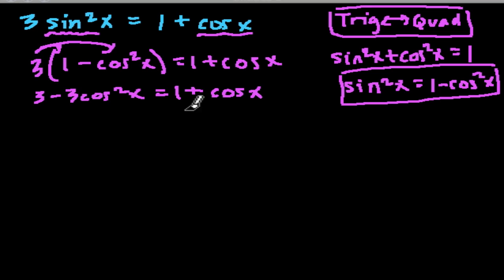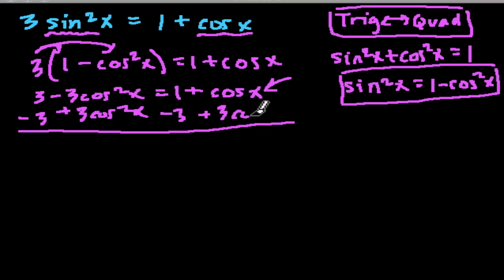I'm going to bring everything over to this side of the equation because I want to get rid of this negative 3 cosine squared of x. I want to get a positive, so I'm going to add cosine squared of x. I'm going to subtract 3 from both sides. Subtract 3 and add 3 cosine squared of x.